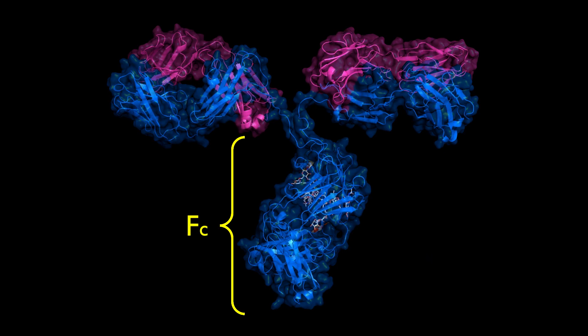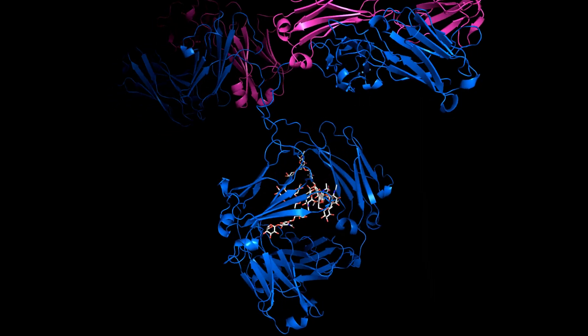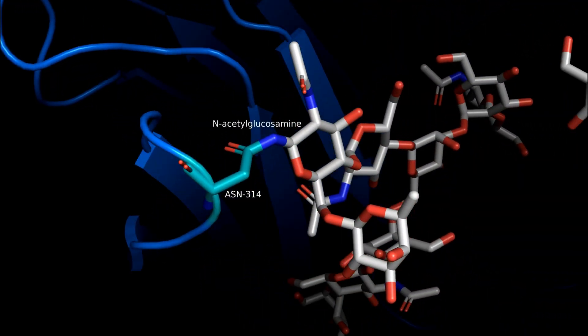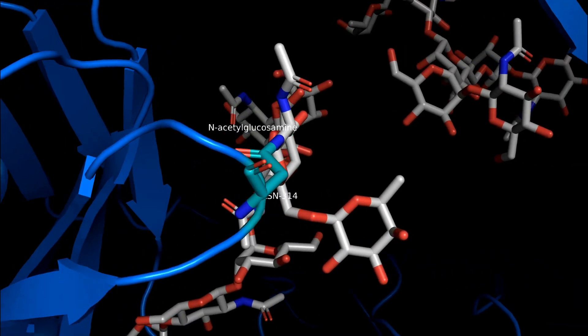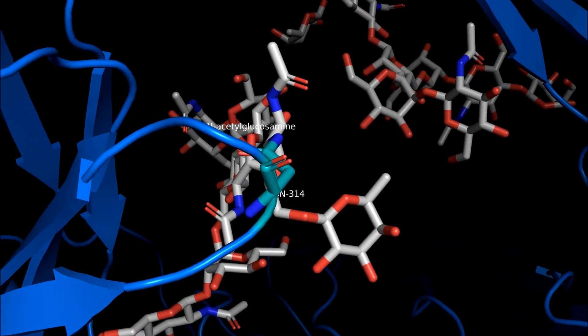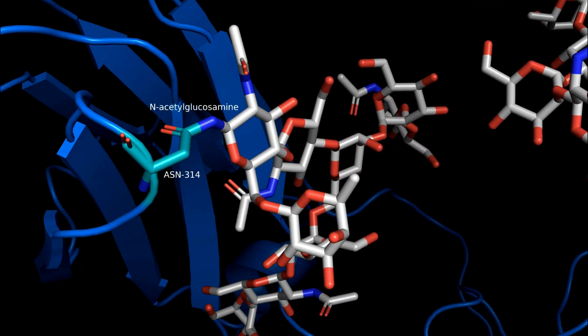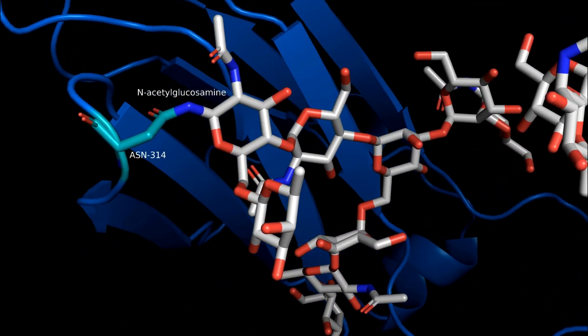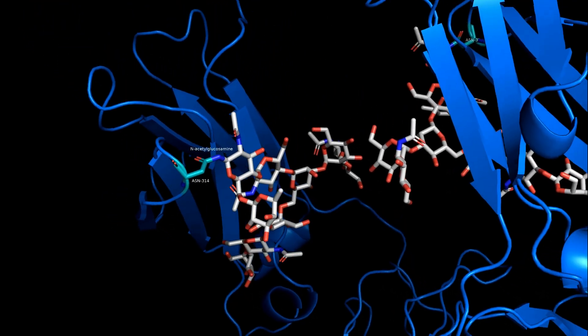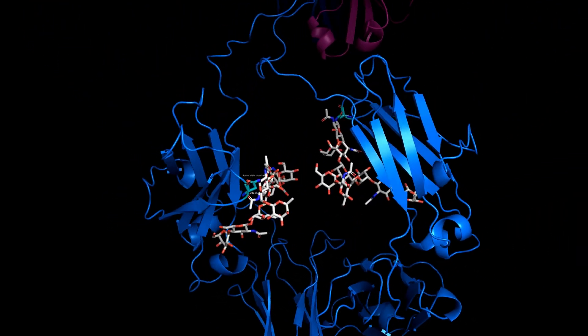Within the FC, there are two identical carbohydrate chains, bound to the protein through a covalent bond with the side chain of an asparagine amino acid residue. In addition to stabilizing the immunoglobulin structure, these carbohydrates may play a role in antibody secretion and antigen elimination.